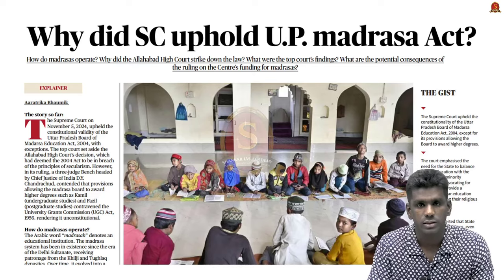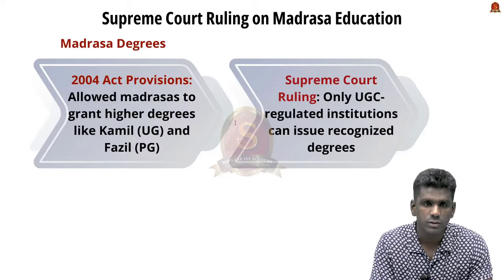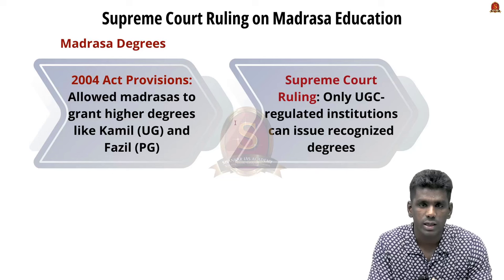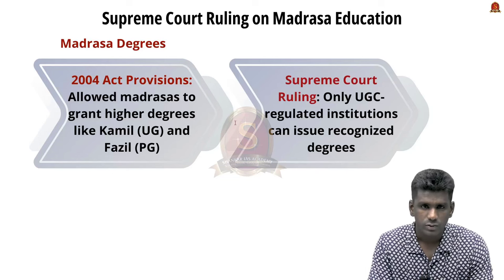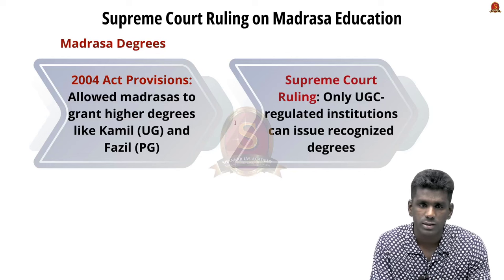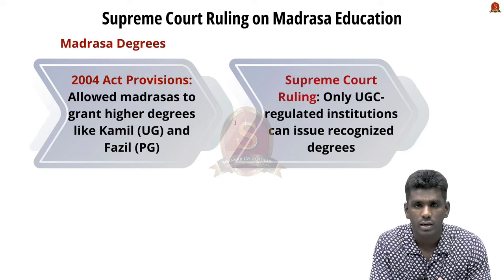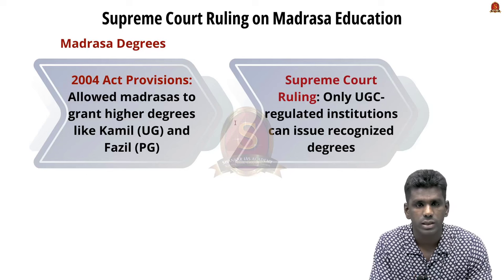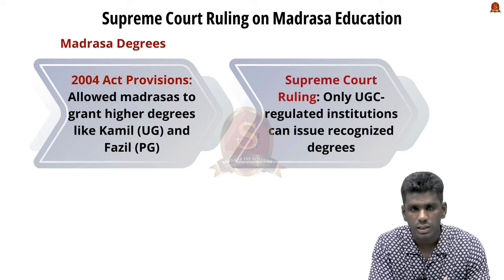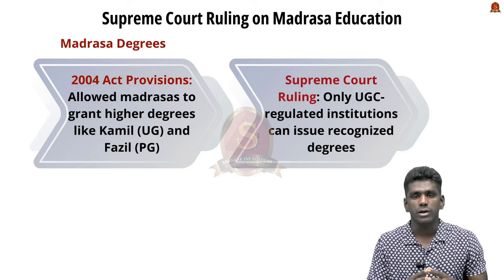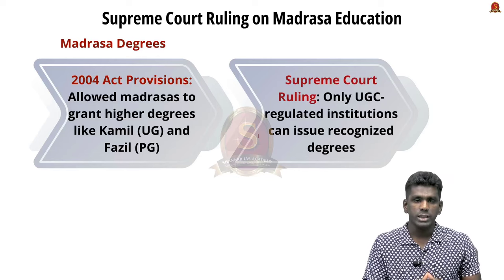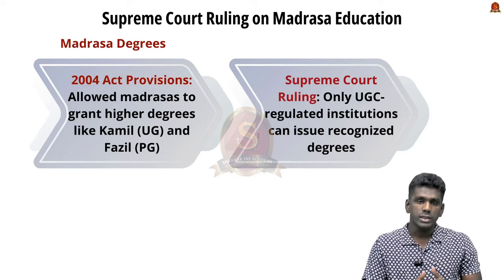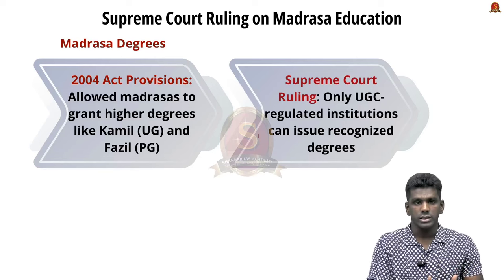The Supreme Court found that provisions in the 2004 act allowed Madrasas to grant higher education degrees like KAMIL, which is an undergraduate degree, and FASIL, which is a postgraduate degree. These degrees granted by Madrasas violated the University Grants Commission Act of 1956, and the court ruled that only institutions regulated by UGC should be allowed to issue such degrees. The Supreme Court emphasized that while Madrasas are religious institutions, they should also provide secular education as part of their curriculum, in order to align with state education standards, ensuring students receive a balanced education.